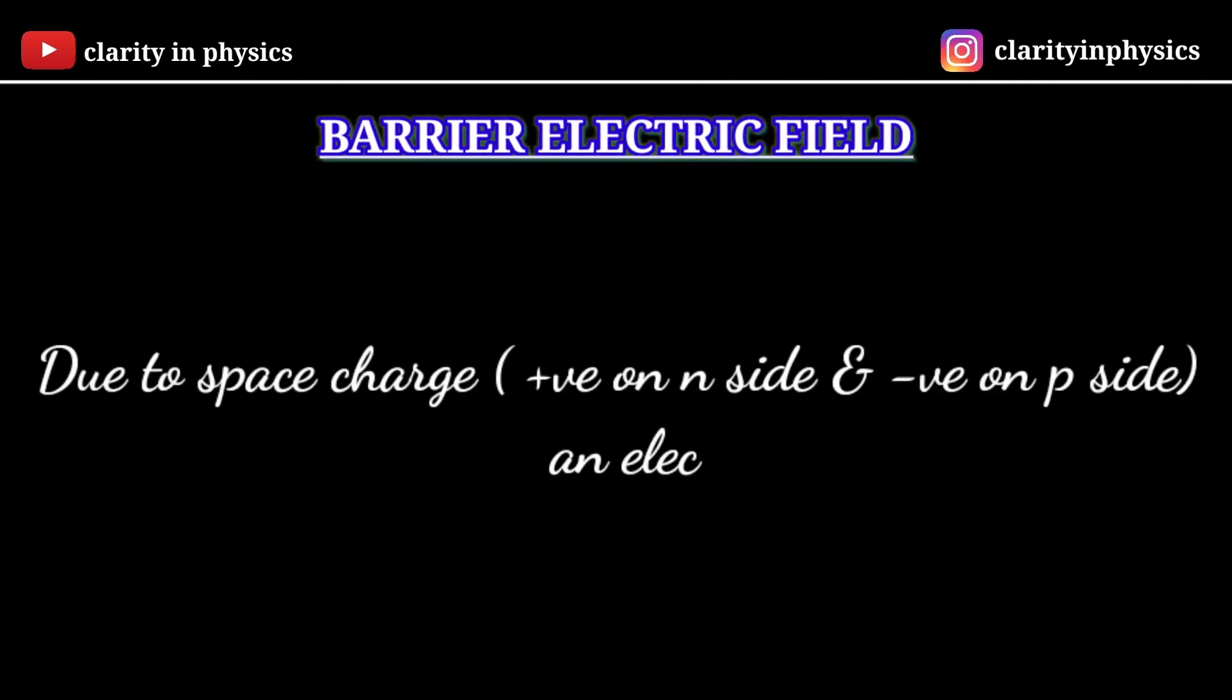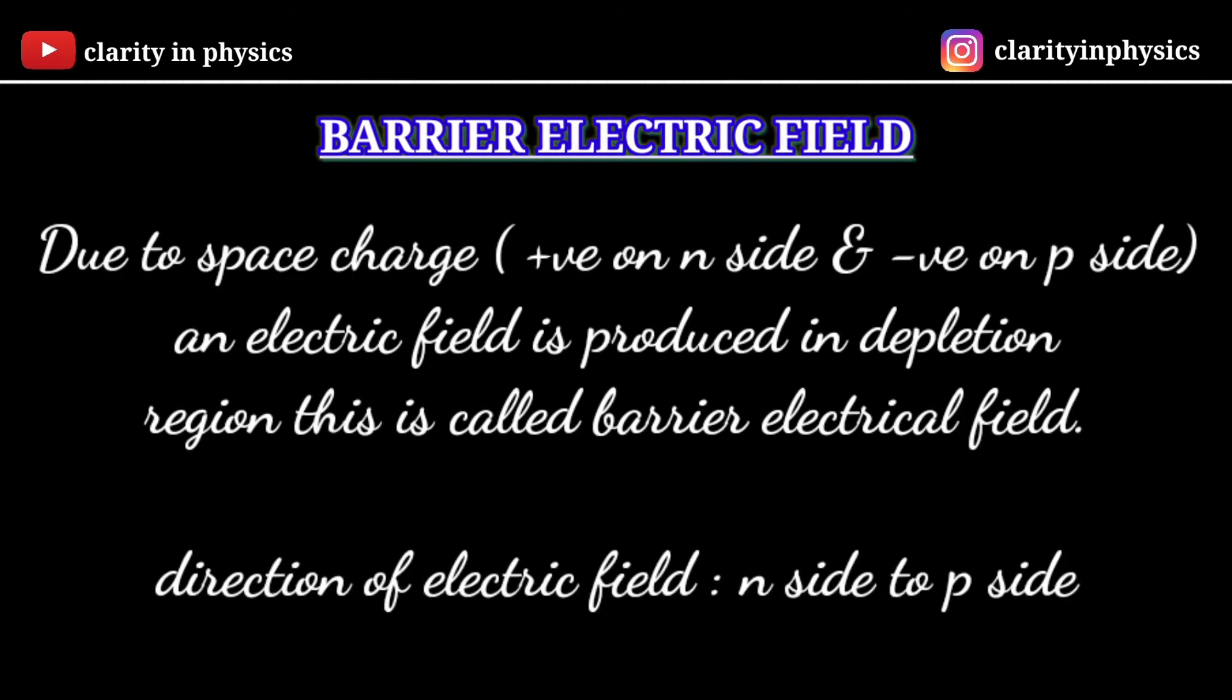Barrier Electric Field. Due to space charge, an electric field is produced in depletion region. This is called Barrier Electrical Field, and the direction of this field is N-side to P-side.